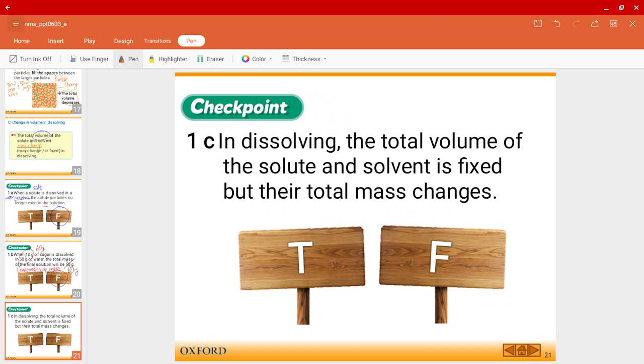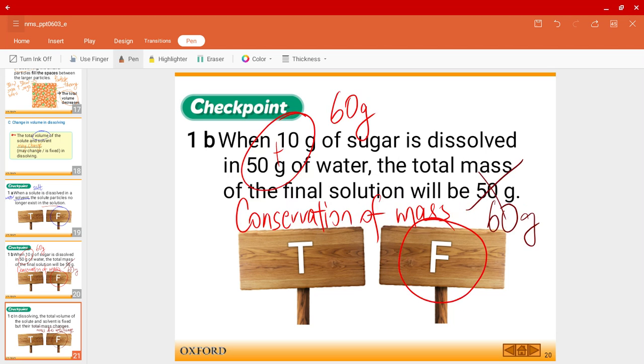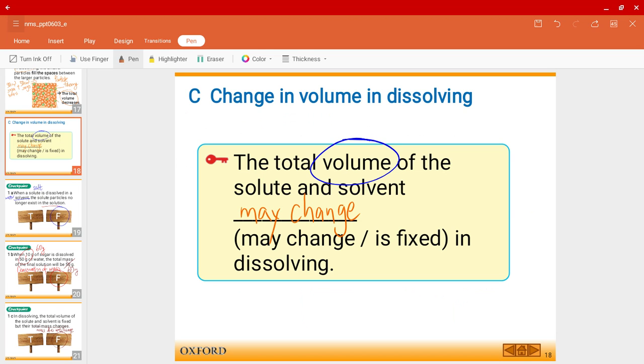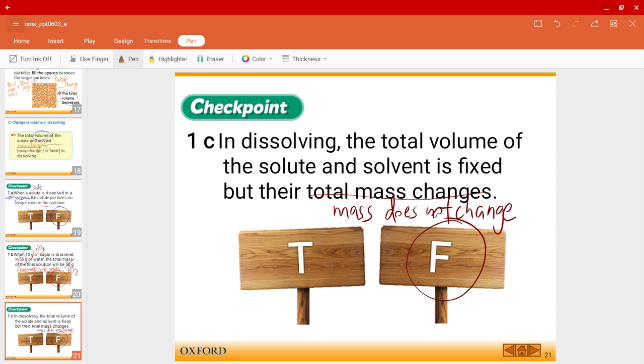Let's see question C. In dissolving, the total volume of the solute and solvent is fixed, but their total mass changes. Is that true? Of course not. False. As I mentioned earlier, mass does not change. And just now, we just saw that the total volume of the solute and solvent is not fixed. It may change. So over here, this part is wrong. It may change. It's not fixed.